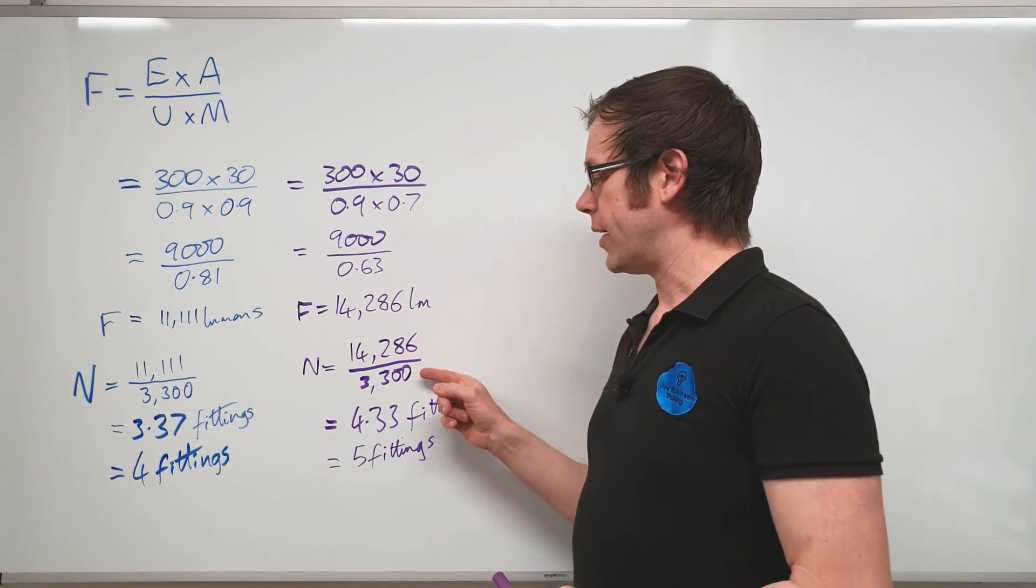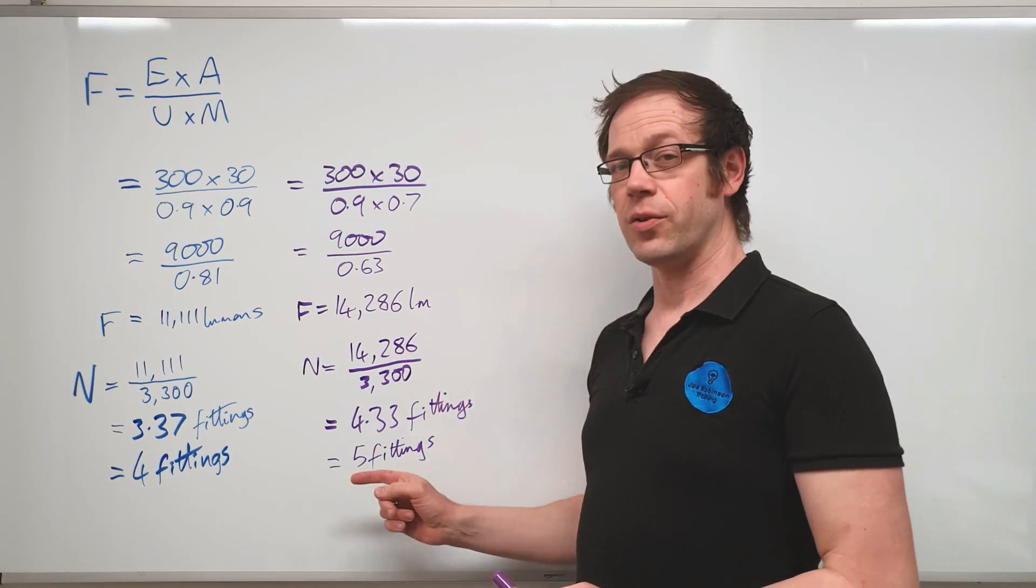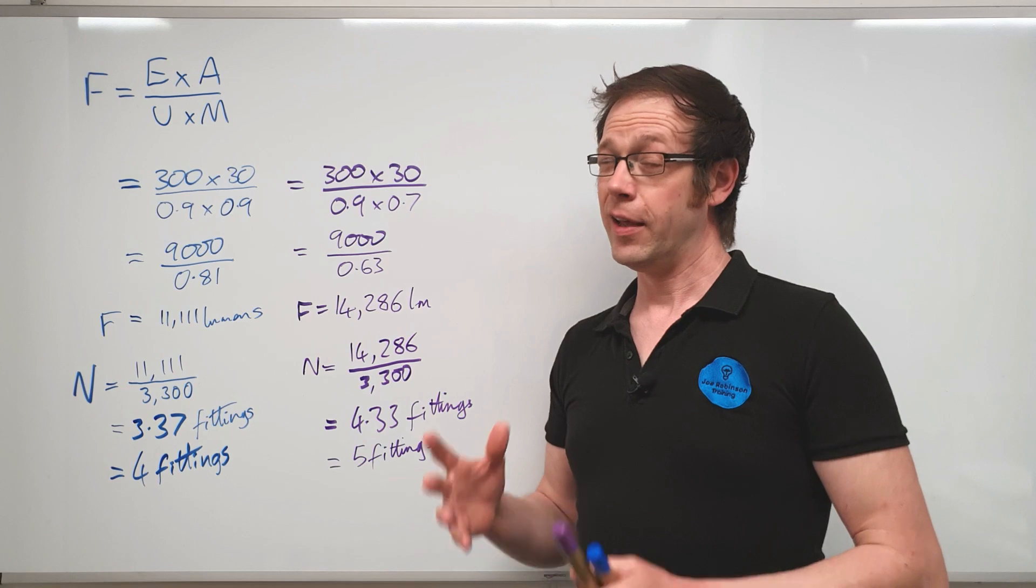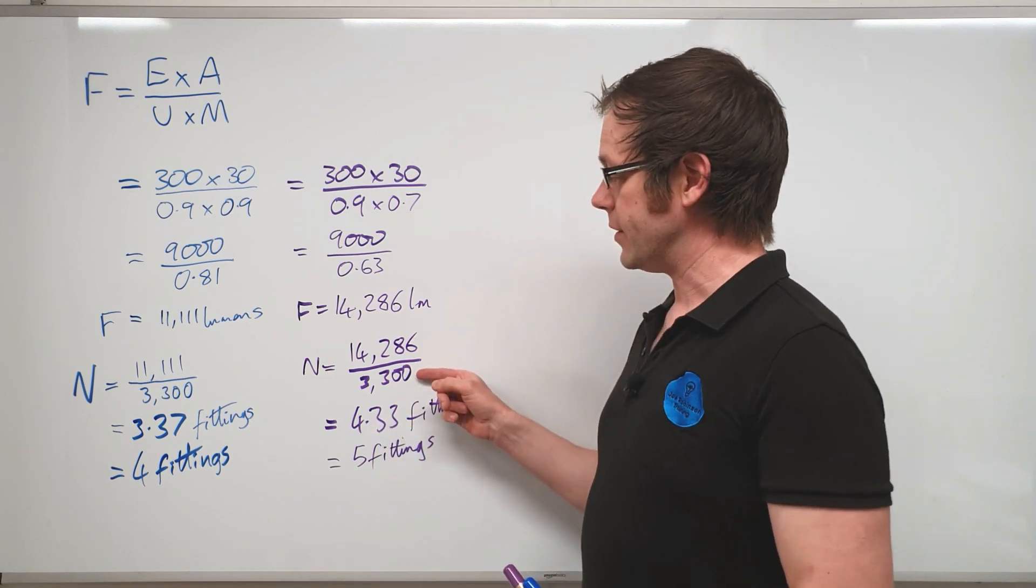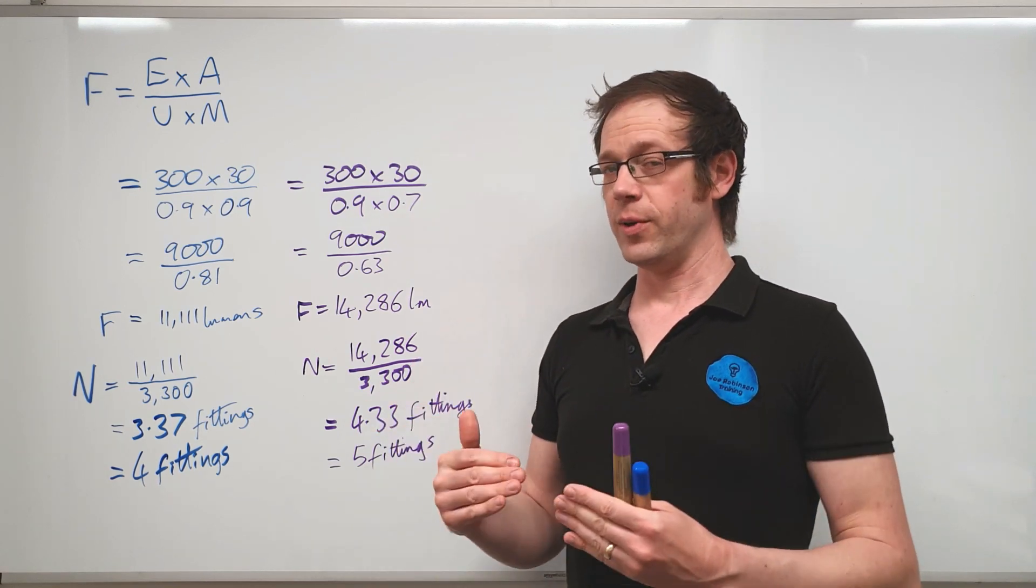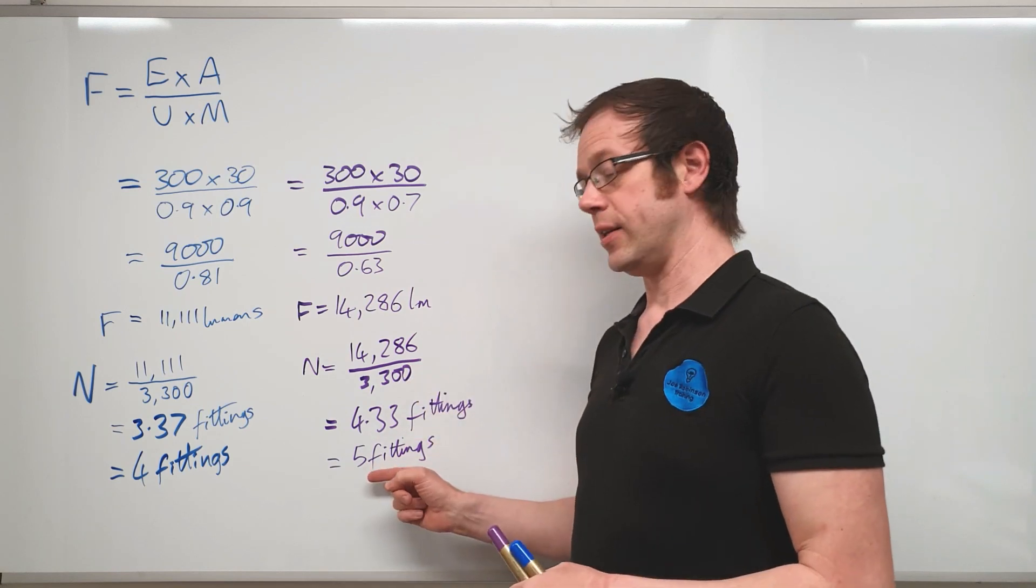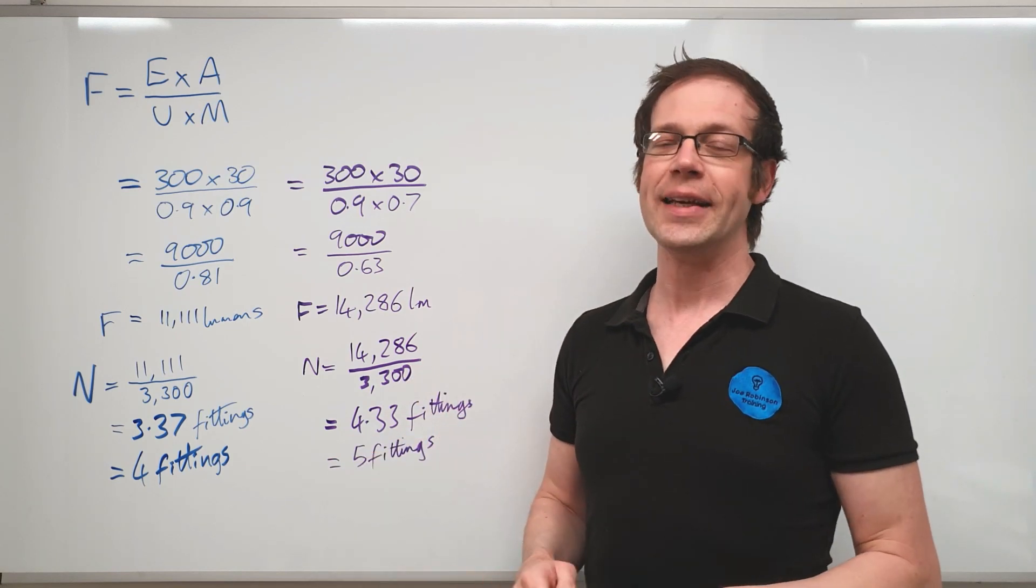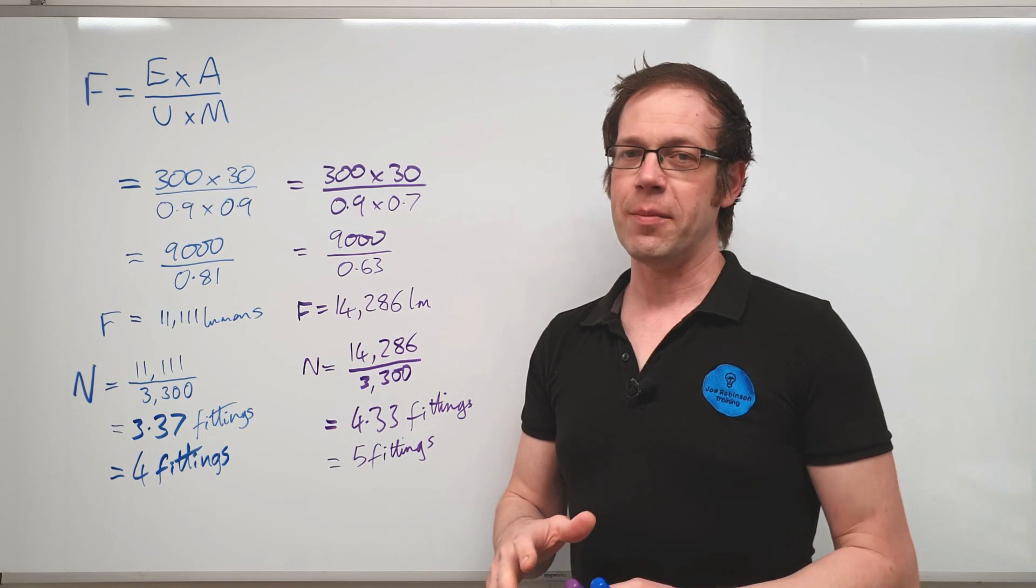Not necessarily less efficacy, but a lower value of luminous flux, so that you actually end up installing slightly more fittings. Or you might go the other way and decide that you want to get a light fitting with a higher value of luminous flux, in which case you end up installing slightly less fittings.